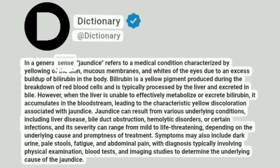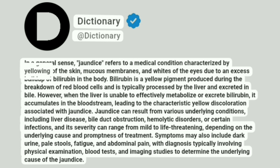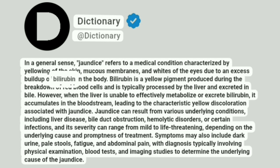In a general sense, jaundice refers to a medical condition characterized by yellowing of the skin, mucous membranes, and whites of the eyes due to an excess buildup of bilirubin in the body.